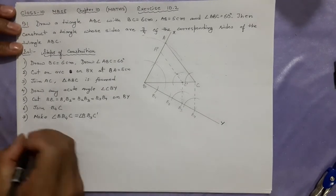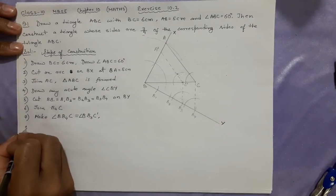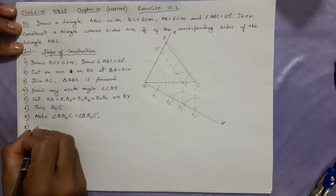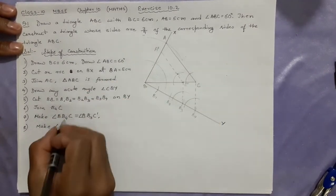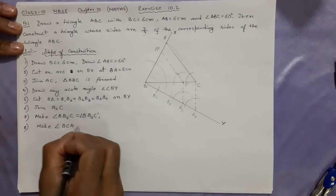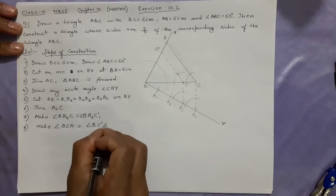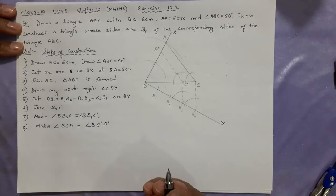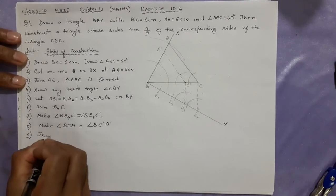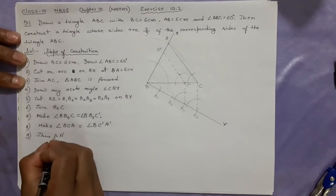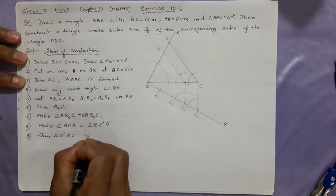Step 8 — Make angle BCA equal to angle BC-dash A-dash, so that BA is parallel to C-dash A-dash. Triangle A-dash B C-dash is now formed, which is similar to triangle ABC.